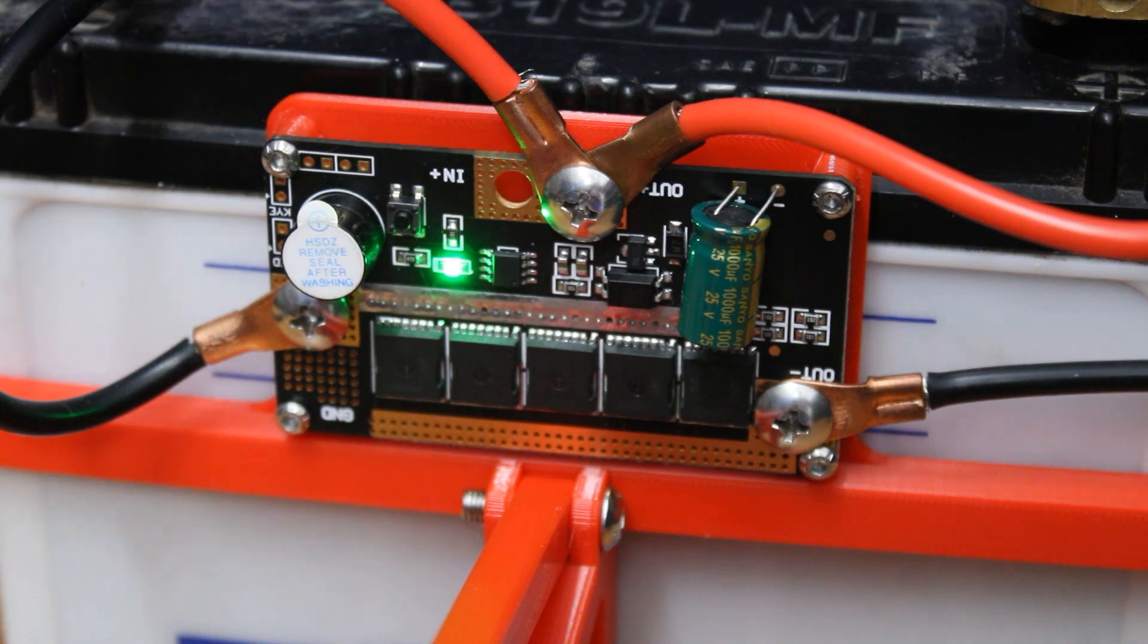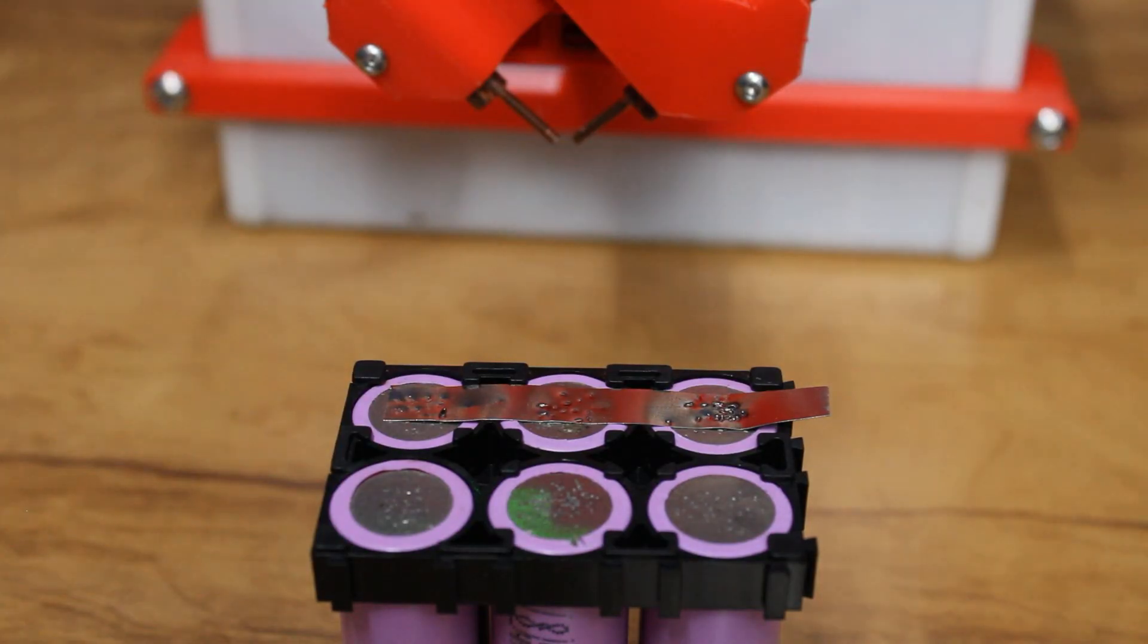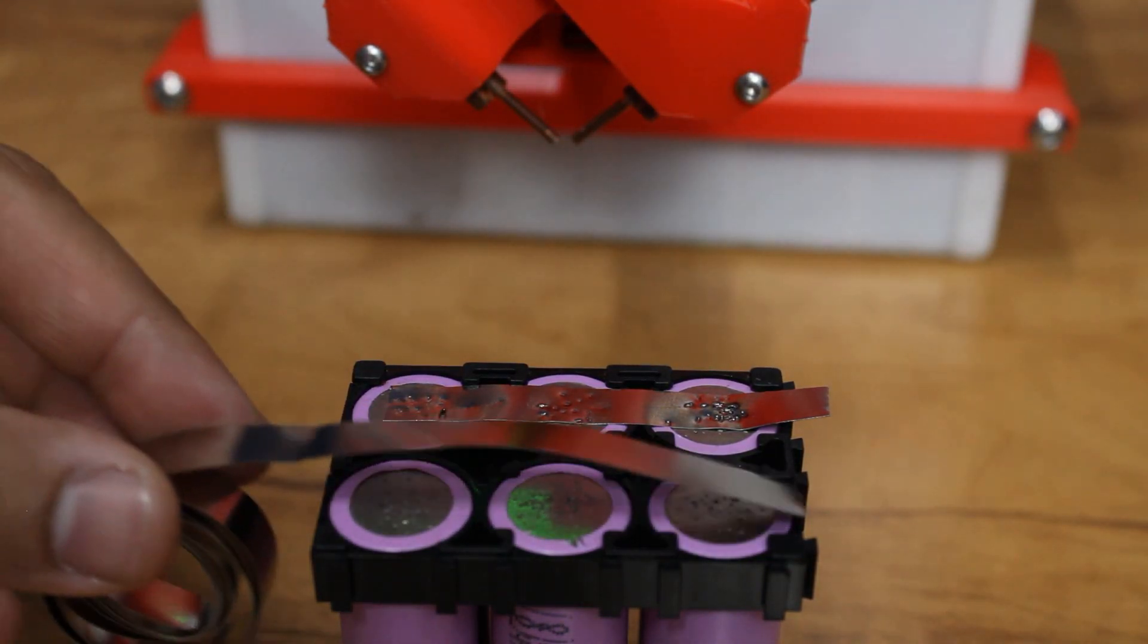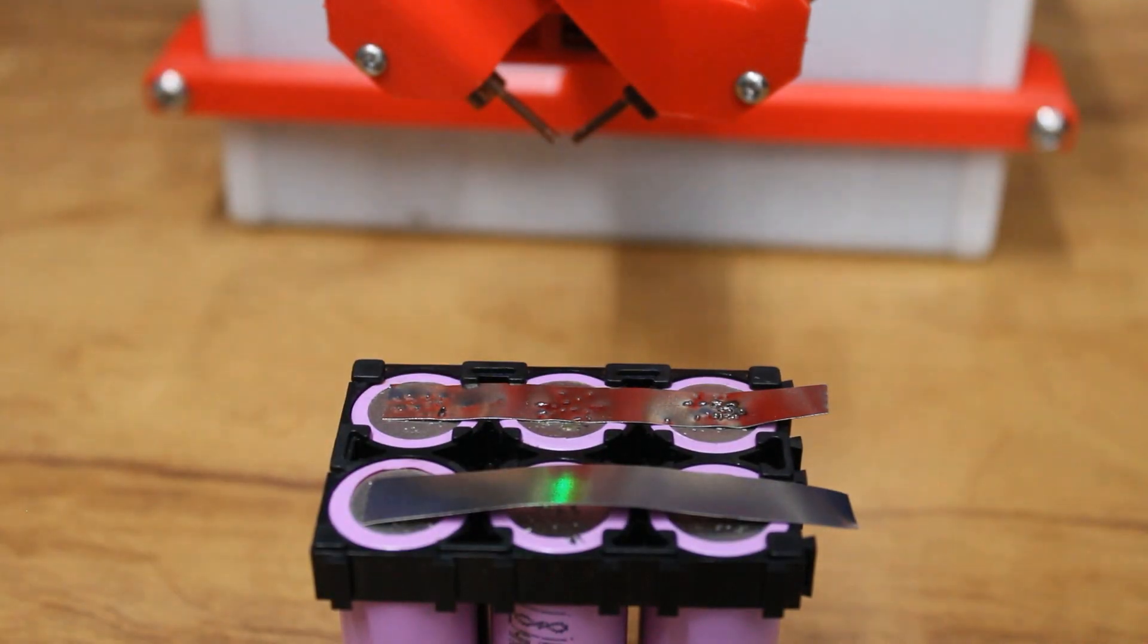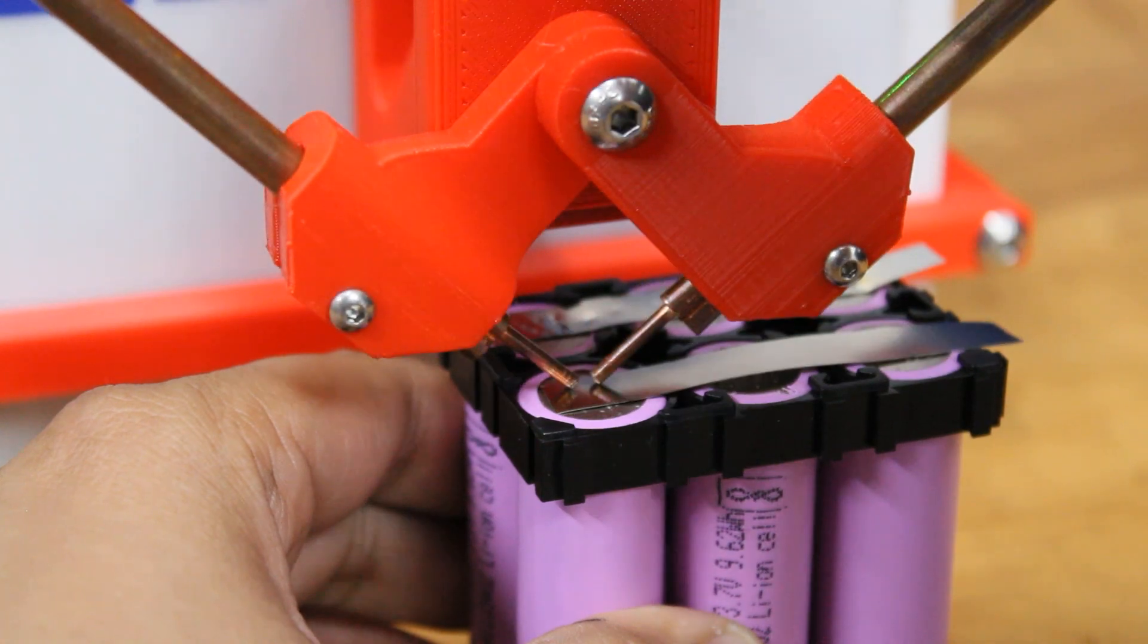It has up to 6 power levels after which the light turns off. Once you set the desired power, place the nickel strip on the battery. Place the battery below the probes and press the lever down.